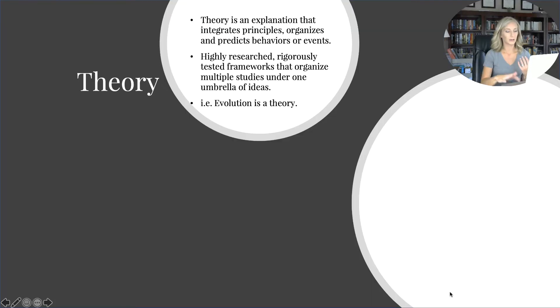So a theory, being a really important part of the scientific method, is an explanation that integrates principles and predicts behaviors or events. It's highly researched, rigorously tested, and organizes multiple studies under one umbrella of an idea. A theory is really just an idea that has multiple pieces of research and evidence to support it by multiple different parties or people involved. For instance, evolution—evolution is a theory. And scientists believe that a theory is as close to truth as we will ever get, simply because of human error.